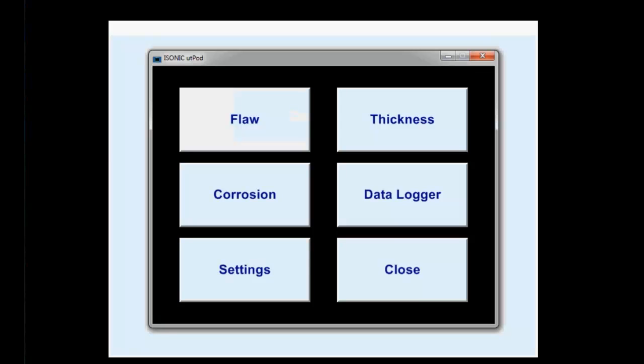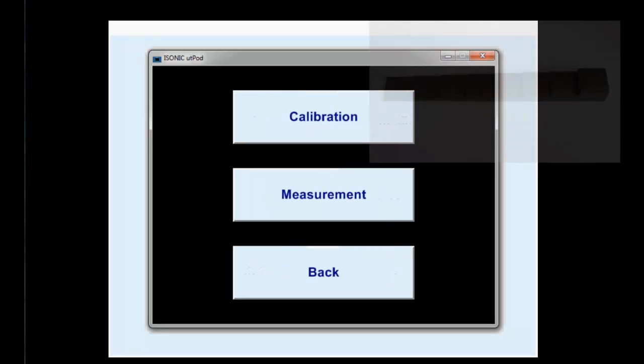In order to work with the right software, if the TR probe is connected you have to choose corrosion. Then this second menu will come up. Here you choose calibration first because you first want to calibrate for this application.